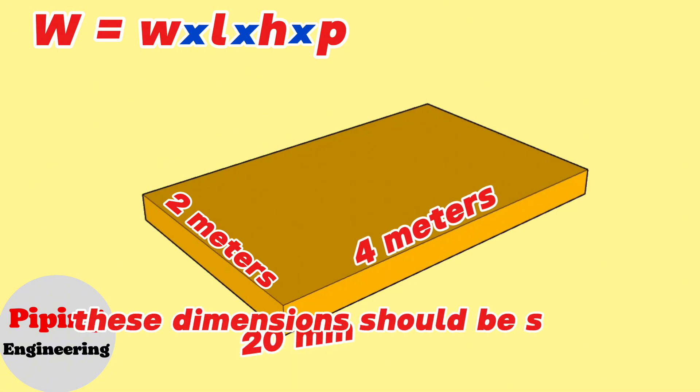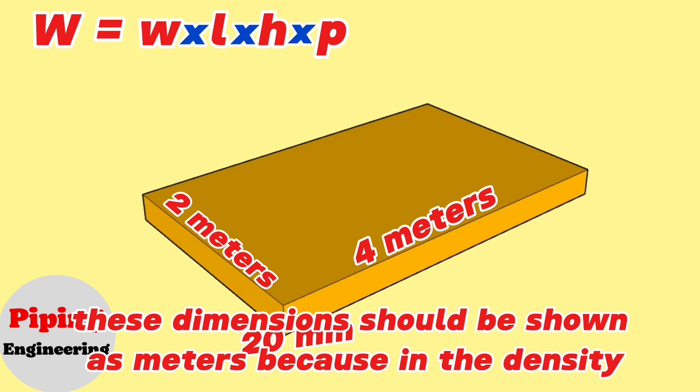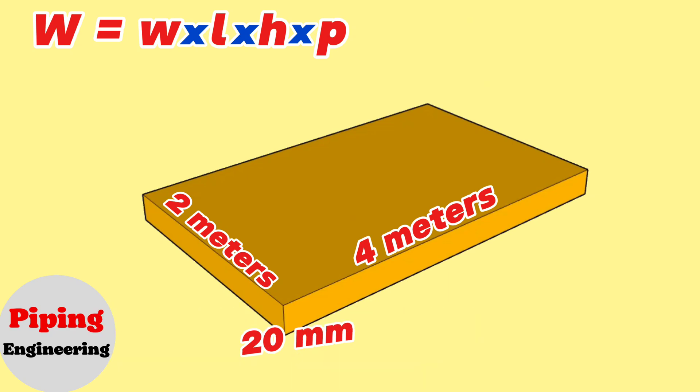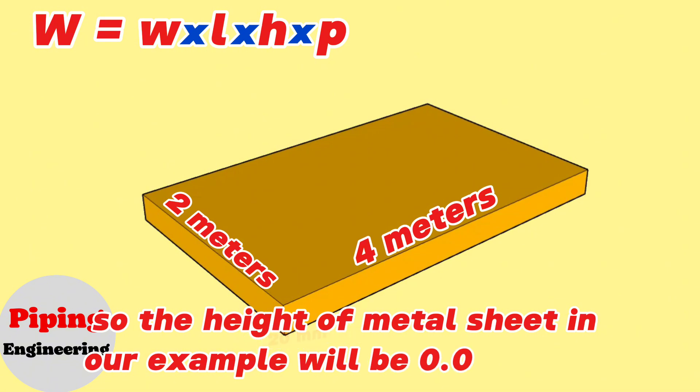These dimensions should be shown as meters because in the density charts of ferrous metals they use meters. So the height of metal sheet in our example will be 0.02 meters.